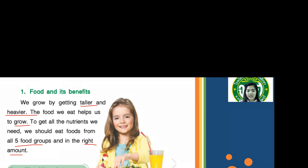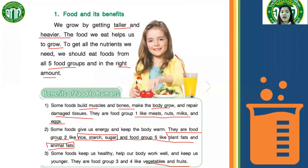Some foods keep us healthy, help our body work well, and keep us younger. They are food group three and four, like vegetables and fruits. So to recap the five food groups: group one is proteins — meats, nuts, milk, and eggs. Group two is carbohydrates — rice, starch, and sugar. Group three and four are vegetables and fruits. Group five is plant fats and animal fats.